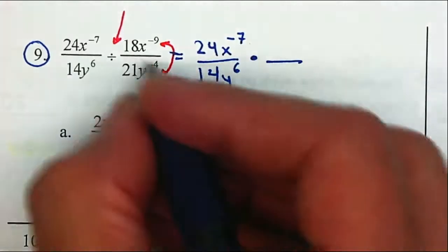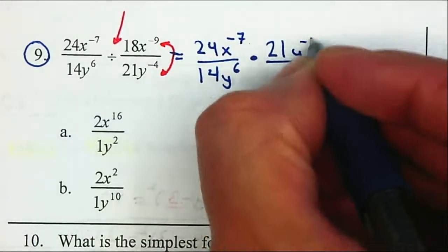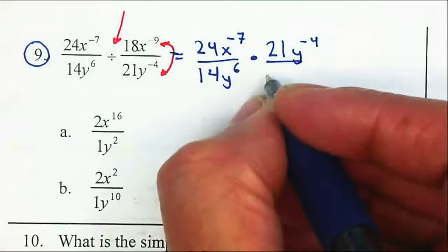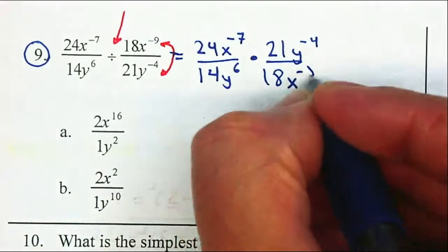24x to the negative 7 over 14y to the 6th power. The second equation, I'm going to take the reciprocal, will be 21y to the negative 4, and this will give me 18x to the negative 9 over 5.